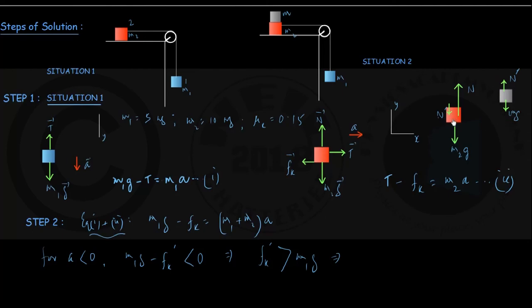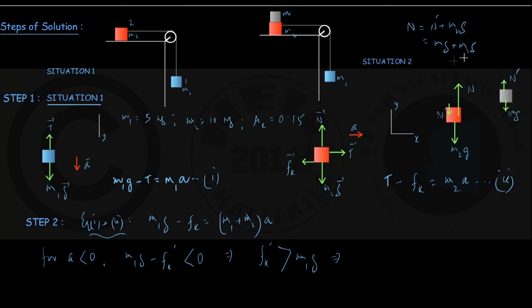For the equilibrium of block m2 in the vertical direction, the forces are m2g downward, n' downward (reaction from block m), and the upward normal force N given by the tabletop. Therefore the total normal force on m2 from the tabletop is N = n' + m2g = mg + m2g = (m + m2)g. In situation 1, the normal force was simply m2g; now it has increased to (m + m2)g.